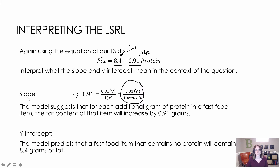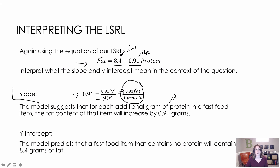To interpret the slope, I always say: the model suggests that for each additional 1 gram of protein in a fast-food item, the fat content of that item will increase by 0.91 grams. For each additional x unit, there will be an increase of however many y units — that is how you interpret the slope.